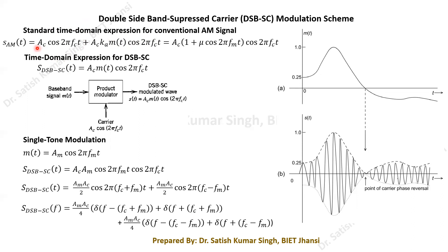In DSBSC we suppress the carrier. Once we eliminate the carrier from the conventional AM expression, we obtain the DSBSC modulated signal: ac·ka·m(t)·cos(2π·fc·t), or simply m(t)·ac·cos(2π·fc·t). So essentially we multiply the message signal m(t) directly with the carrier. A product modulator circuit performs this multiplication of the baseband message signal with the carrier to produce the DSBSC modulated wave.